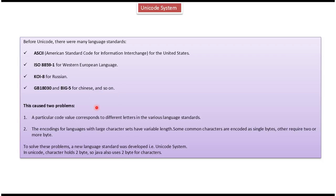These different encoding schemes caused two problems. The first is that a particular code value corresponds to different letters in various language standards. The second is that encodings for languages with larger character sets have variable length. To solve all these problems, a new standard was developed: the Unicode system.